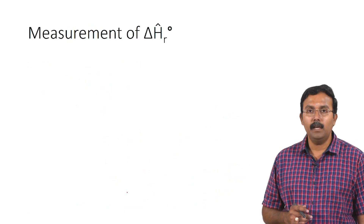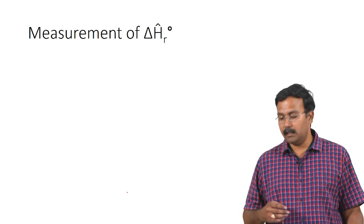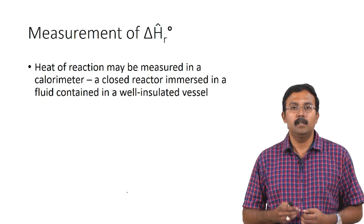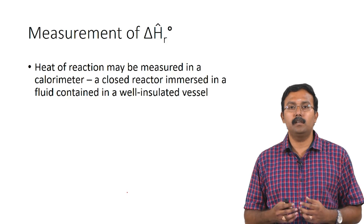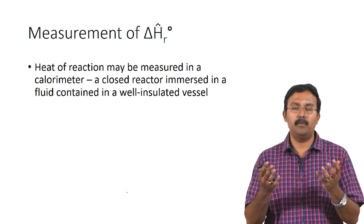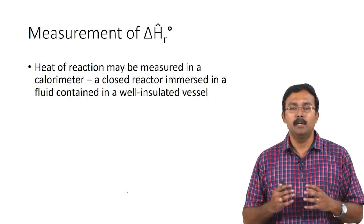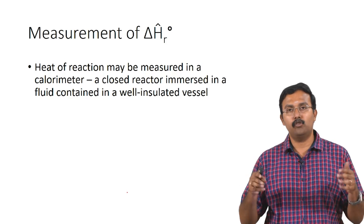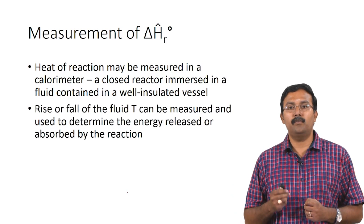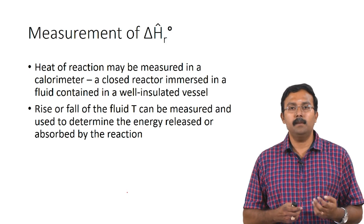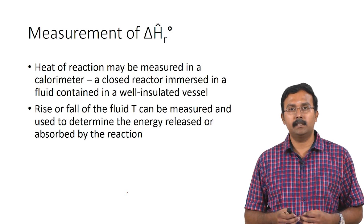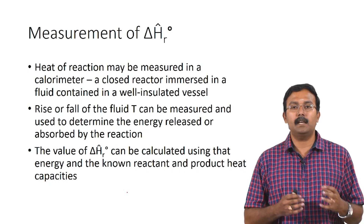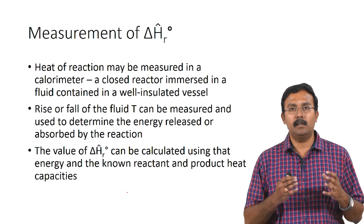Moving on — how do we actually measure ΔH_R? Heat of reaction can be measured using a calorimeter, which is a closed reactor immersed in a fluid contained in a well-insulated vessel. All the heat generated or lost during the reaction is transferred to the surrounding fluid, and nothing is lost to the outside. The rise or fall in fluid temperature is measured with a thermometer, and the energy released or absorbed by the reaction is determined using simple energy balance calculations.